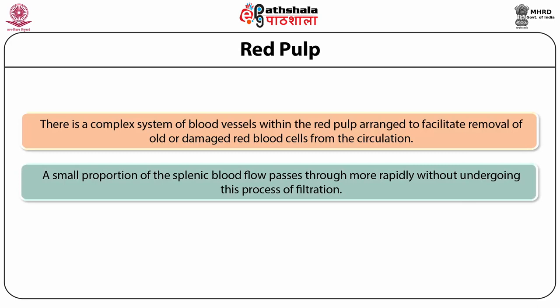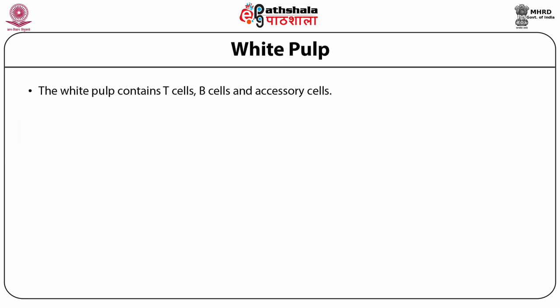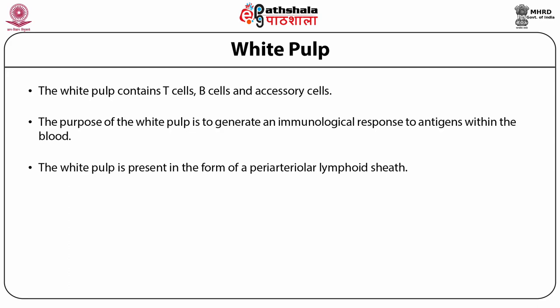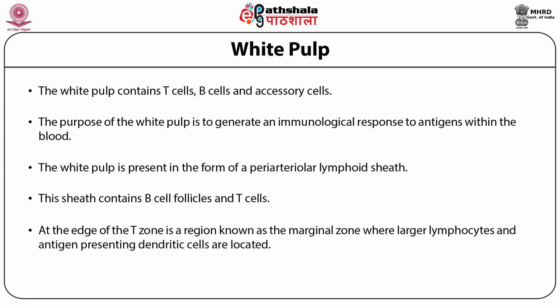A small proportion of the splenic blood flow passes through more rapidly without undergoing filtration. The white pulp contains B cells, T cells, and accessory cells, and its purpose is to generate an immunological response to antigens within the blood. The white pulp is present in the form of a peri-arteriolar lymphoid sheet containing B cell follicles and T cells. At the edge of the T zone is a region known as the marginal zone where larger lymphocytes and antigen-presenting dendritic cells are located.